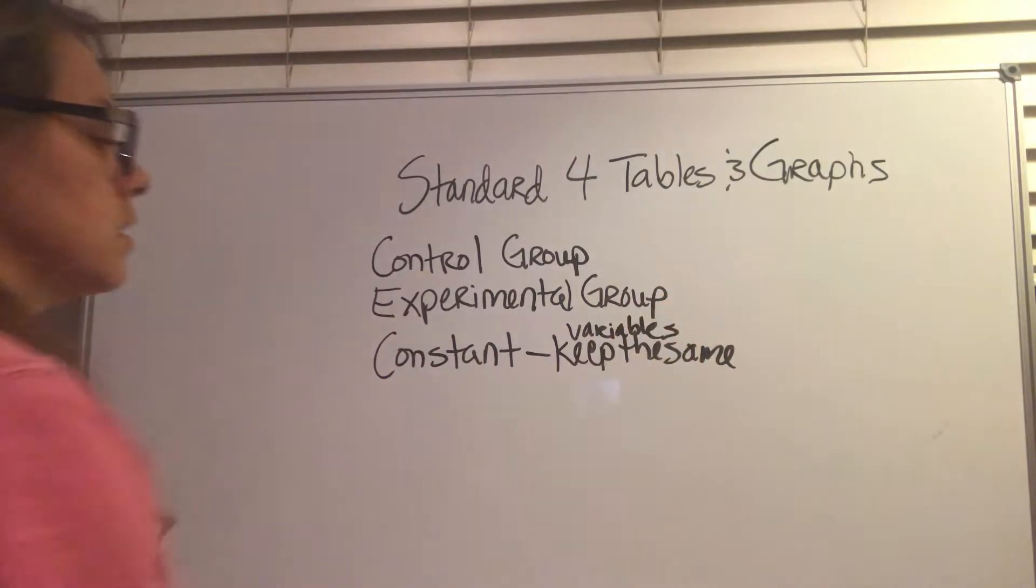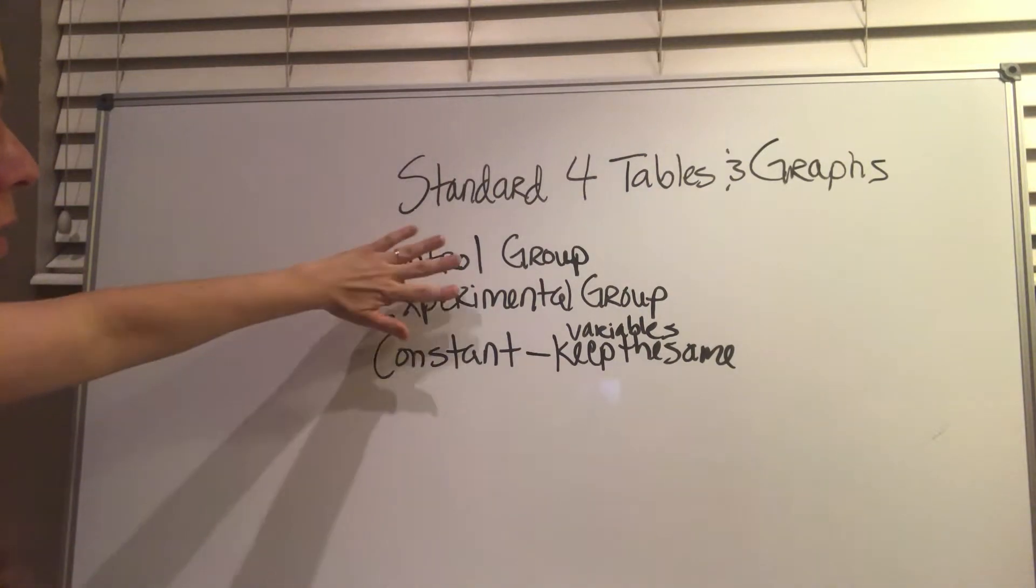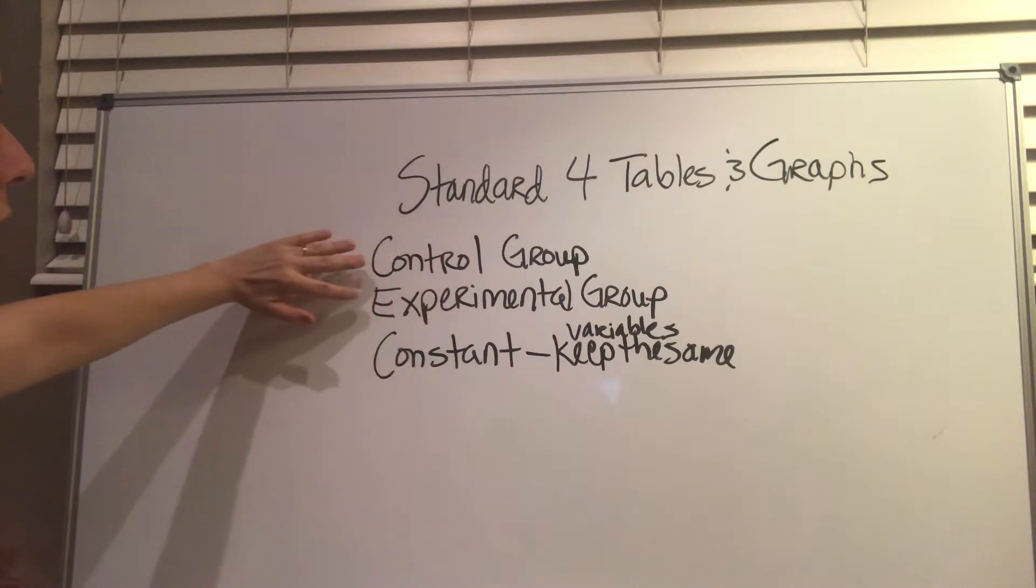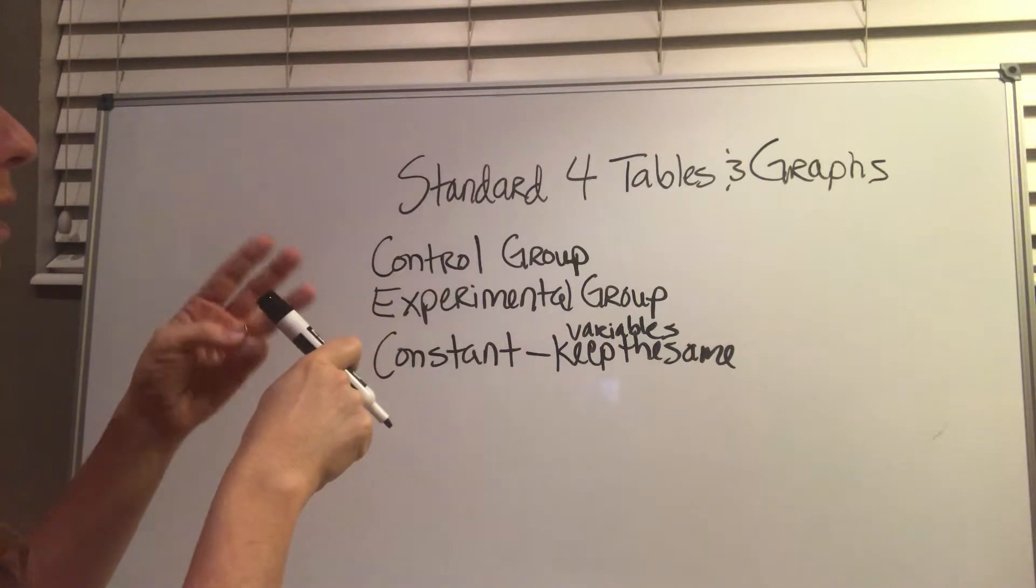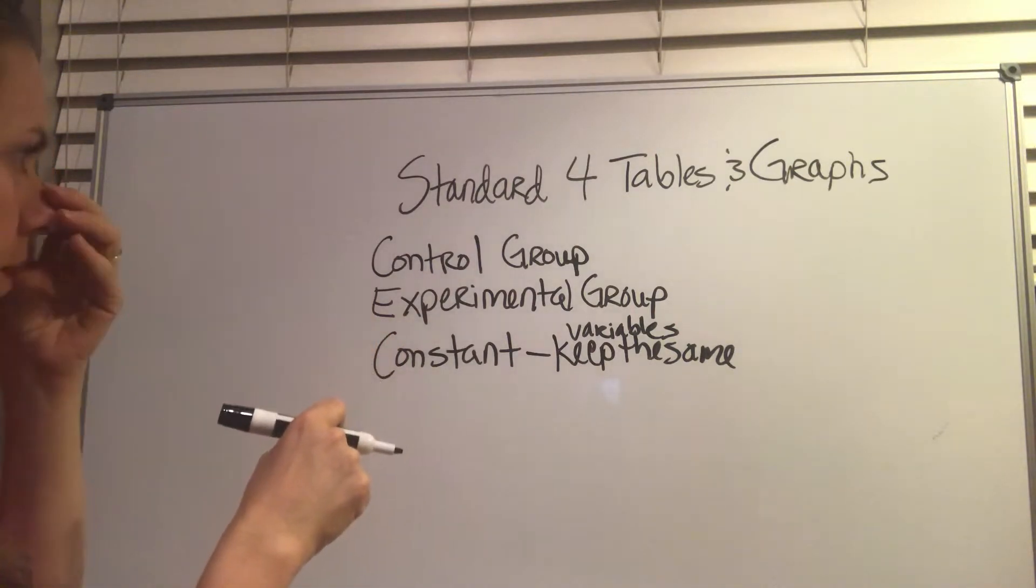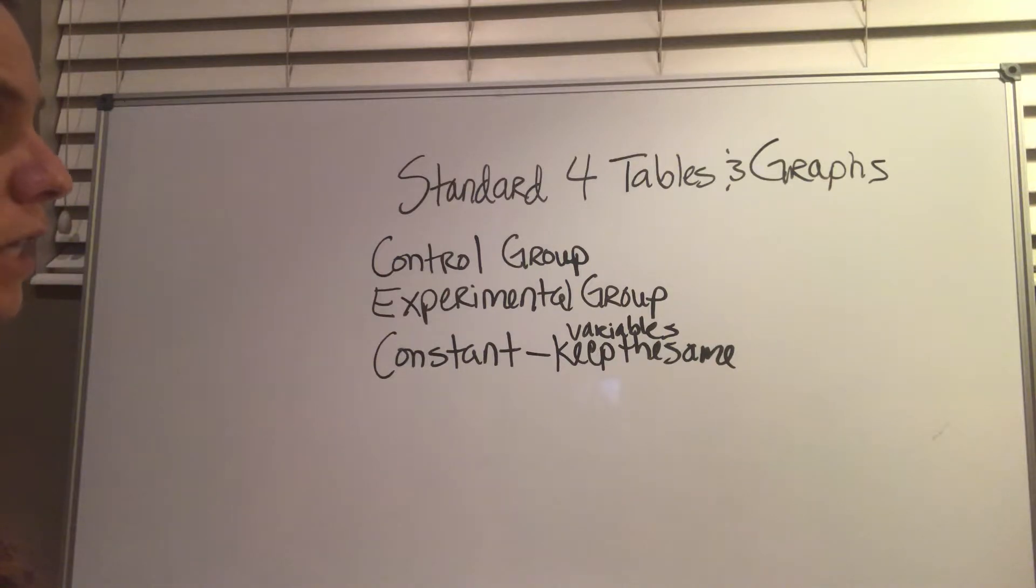Like in our photosynthesis lab for figuring out where the mass of a plant comes from, we had to pick an experimental group or an independent variable, which was either sunlight, soil, carbon dioxide, or water. And so if we picked, let's say, water, we had to keep all the other variables the same, like give them the same amount of carbon dioxide, same amount of sunlight, same amount of soil. We couldn't vary those things. We had to keep them completely the same. Those are our constants.